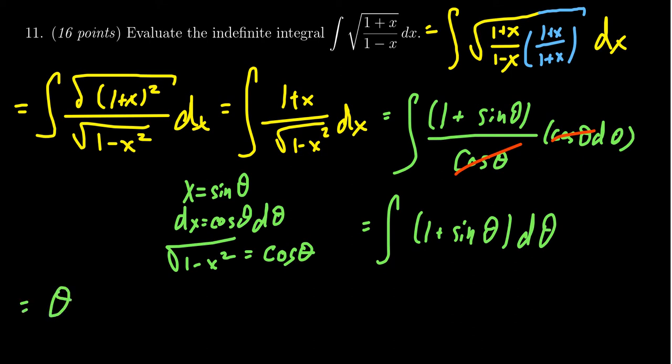The antiderivative there will be theta plus, I need the antiderivative of sine, which is actually a negative cosine. So you get theta minus cosine theta plus a constant. Don't forget the constant there.